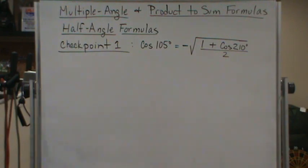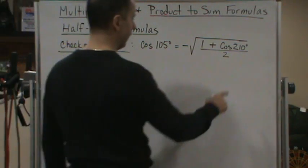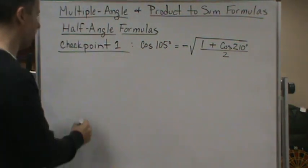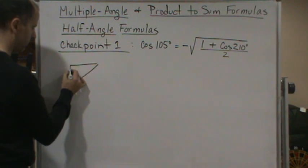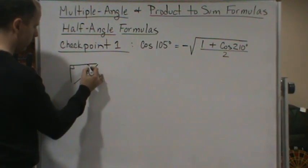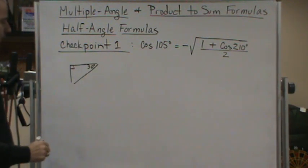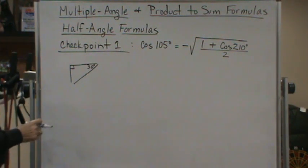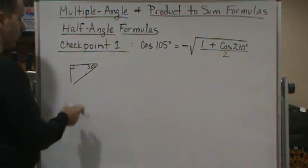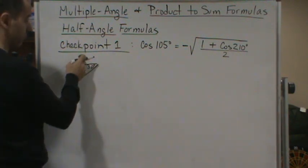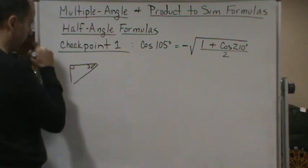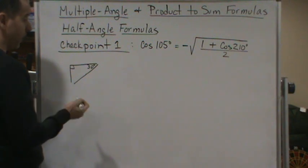Now we know we're going to deal with the 210 degrees. 210 degrees, as we saw before, is a 30-degree angle in the third quadrant. So cosine of 210 degrees, or cosine of 30 degrees, is going to be negative because cosine is negative in the third quadrant.